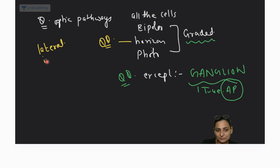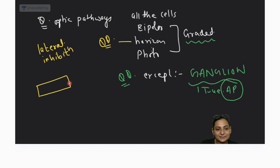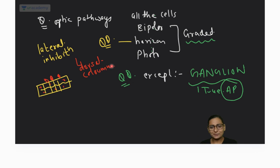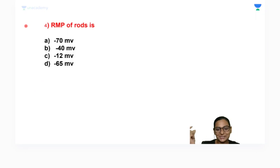Horizontal cells show a phenomenon of lateral inhibition, which plays a very important role in contrast. Another pathway showing lateral inhibition is the dorsal column pathway. Wherever you require fineness and contrast, lateral inhibition is used.